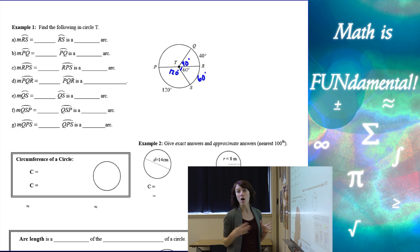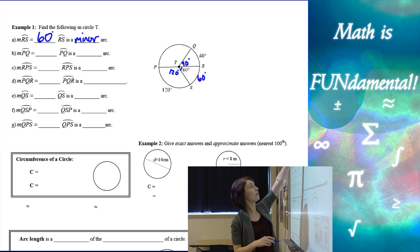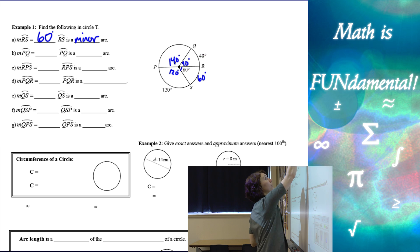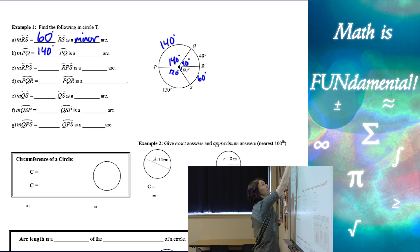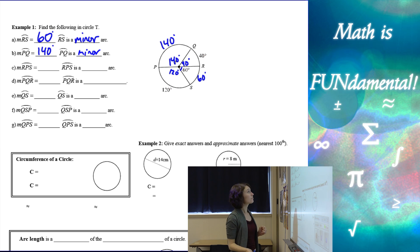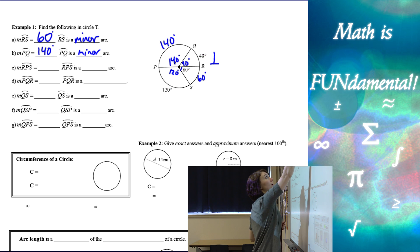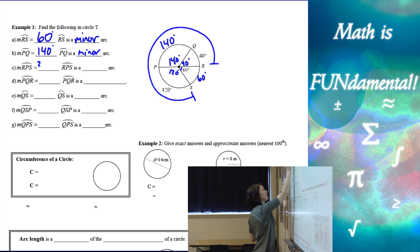There's a lot we can do with this circle without really having to calculate anything. Arc RS is 60 because it's a minor arc equal to its central angle. For arc PQ: if QR is 40 and we need the semicircle to be 180 degrees, then PQ has to be 140 degrees — and that's also a minor arc because it's less than half the circle. For arc RPS — starting at R, going through P all the way to S — that's the entire circle except for 60 degrees, so 360 minus 60 gives us 300. That's a major arc.